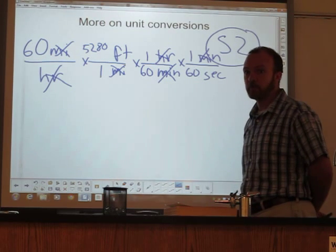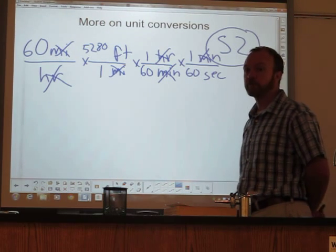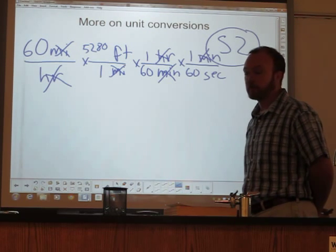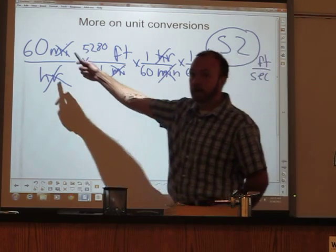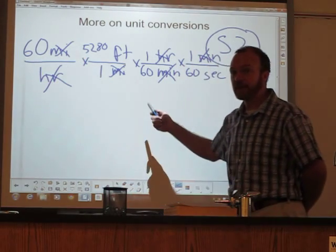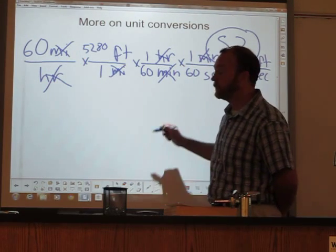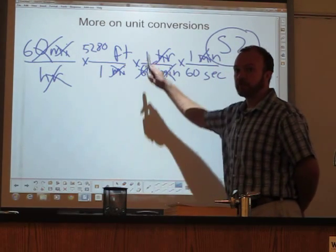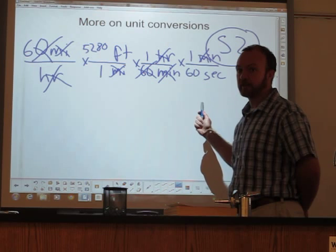So now we just have to work it out. Again, I want you to be able to do some things in your head, or if necessary, on paper. So the first thing you should see here is, with a 60 on bottom and a 60 on top, in a sense they cancel. They divide away to be one. So what we're left with is 5,280 divided by 60.